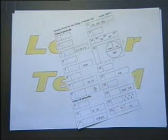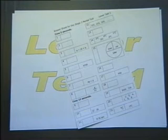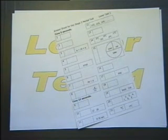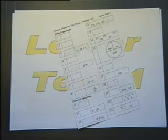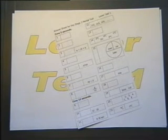Number 15. 500 people went to the show. The pie chart shows how they travelled. How many went by train?